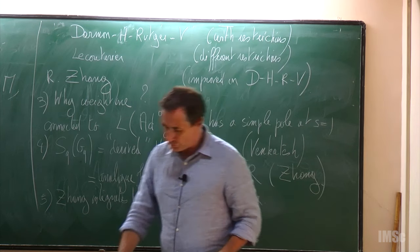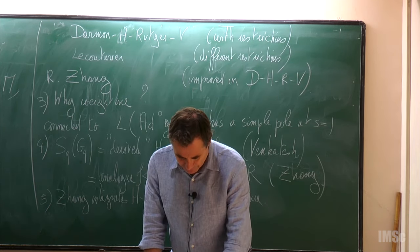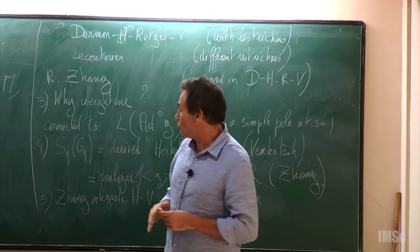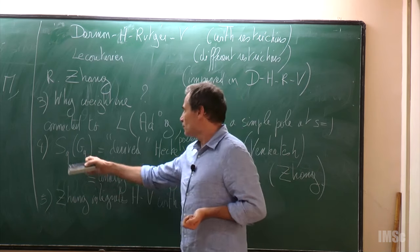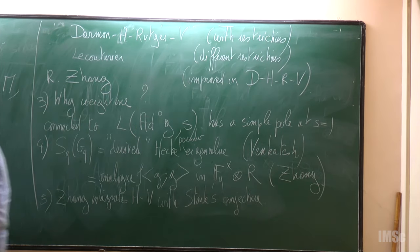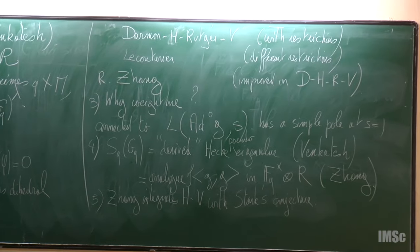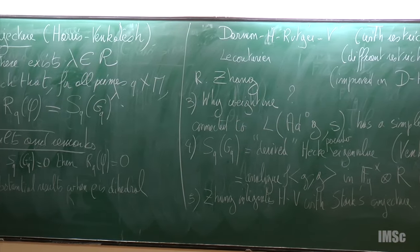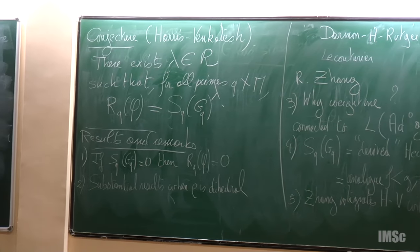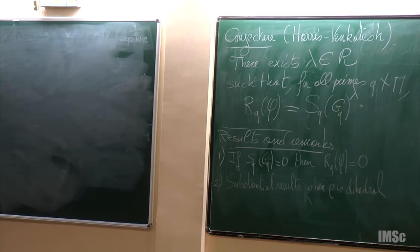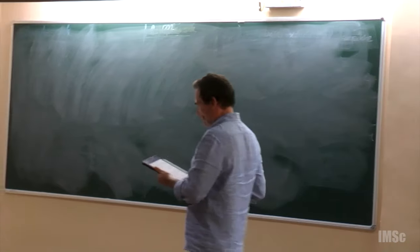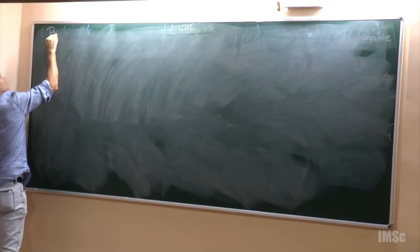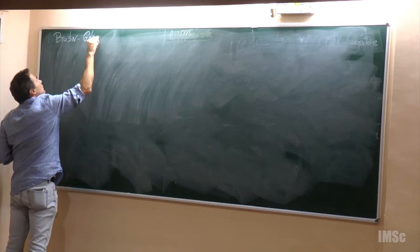Since I have a few minutes, I'm going to tell you another way to consider those things, which in particular provides a manner to compute this number on the automorphic side. This is joint work with Le Couturier. I can only tell you a fraction of what we have done so far, as we are in the process of writing things. It involves the theory of Borisov and Gunnels.